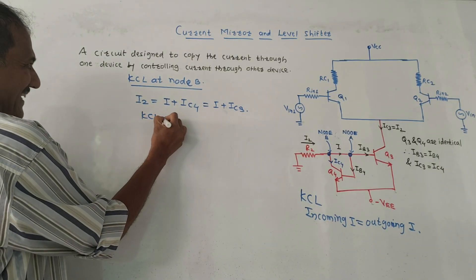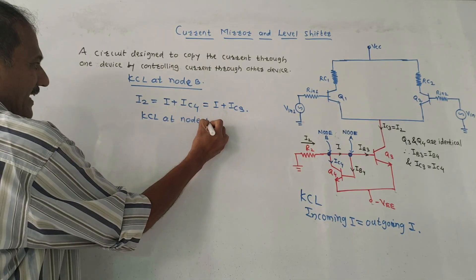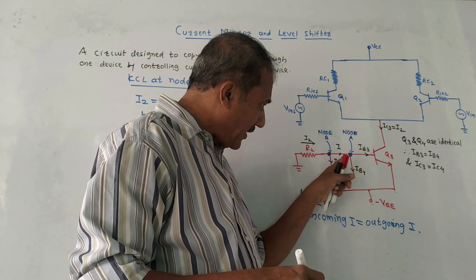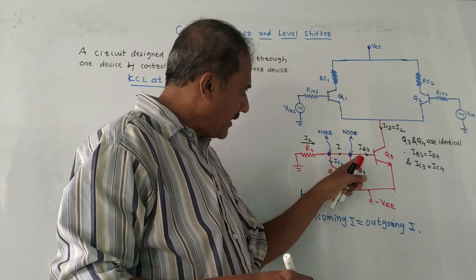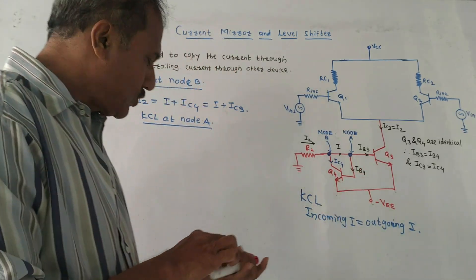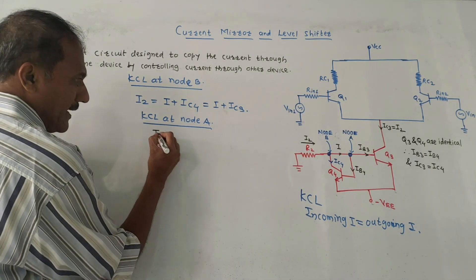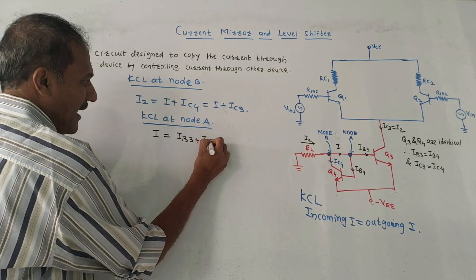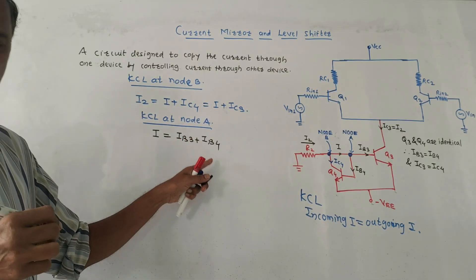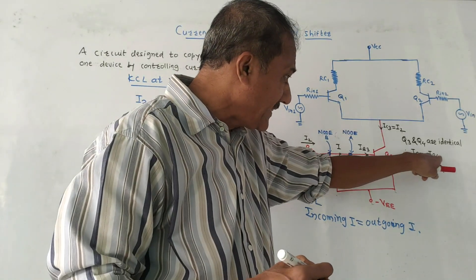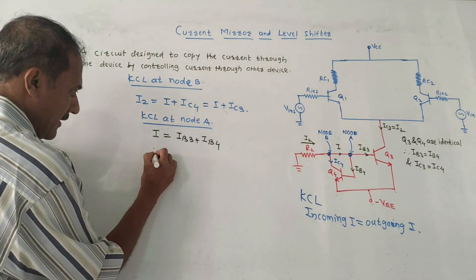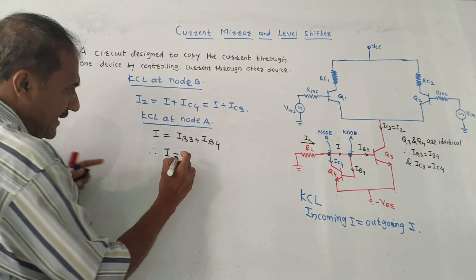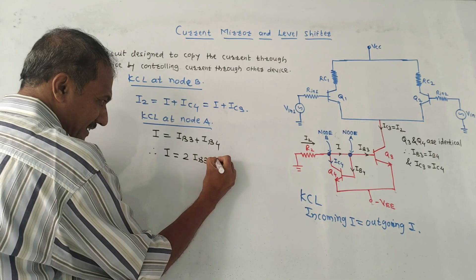Now applying KCL at node A, the incoming current is I and the outgoing currents are IB3 and IB4. So the equation becomes: I equals IB3 plus IB4. Since IB3 equals IB4, this can be written as I equals 2 times IB3.